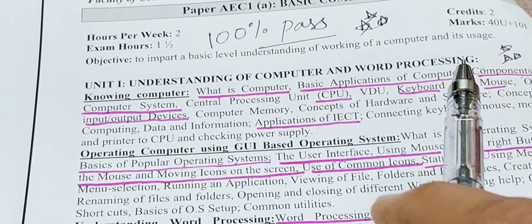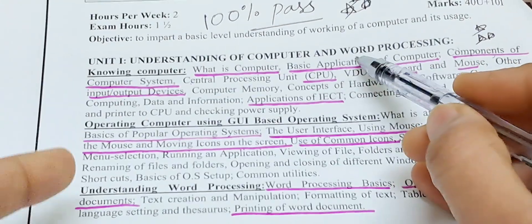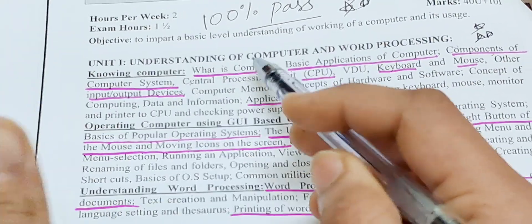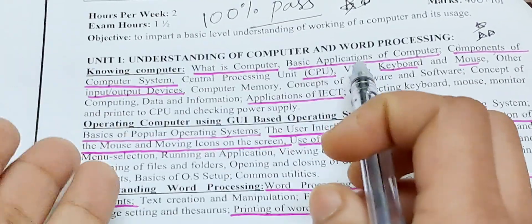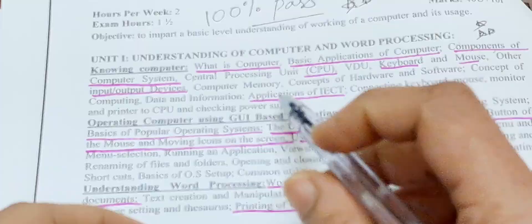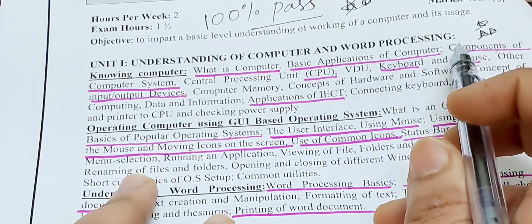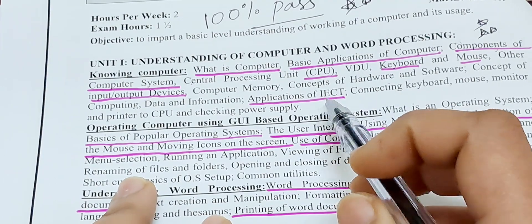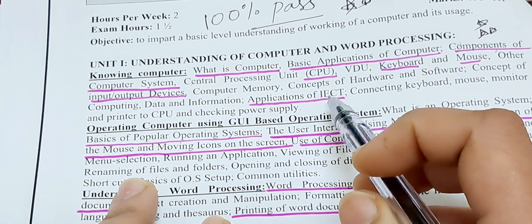The next question in Unit 1 is basic applications of computer — this is the second most important question. When writing this answer, first write the meaning of computer, then write the applications of computer. Application of ICT is important for short answers — sometimes it is asked for long and sometimes for short.